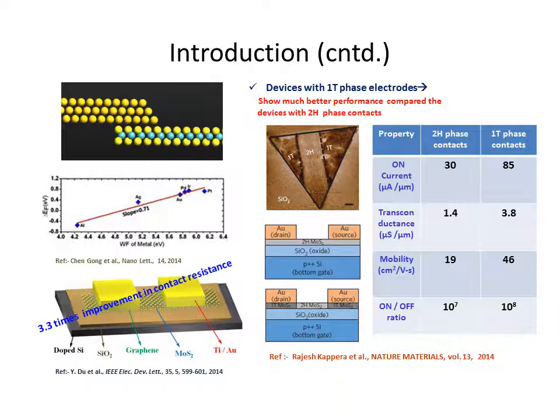Recently, Kappera et al. proposed a radical approach where metallic 1T phases of MoS2 were locally induced on semiconducting 2H phase at the source and drain regions. This resulted in substantial reduction of the contact resistance values. They further observed that the change of metal electrode has limited influence on the transistor performance, suggesting that the properties of phase boundaries dictate carrier injection to the channel.